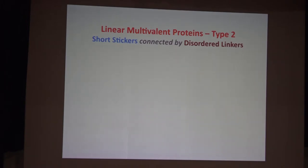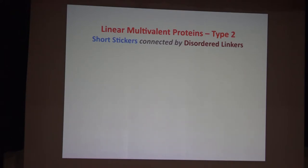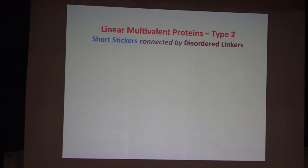That's part one. The second type of system one thinks about is stickers connected by linkers where the stickers are not so obvious. If you've been paying attention to the field, there's been this lurking controversy: how do you get stereo-specificity in high-valency interactions when you don't have folded domains? We're all trained to think you need specific folded domains to give specific interactions. So the question becomes, if I give you a protein with no obviously folded domains and yet observe phase separation, what is the multivalency of? That's the question of how to identify stickers.